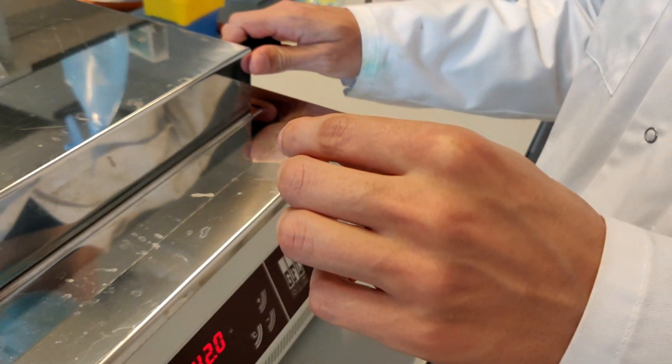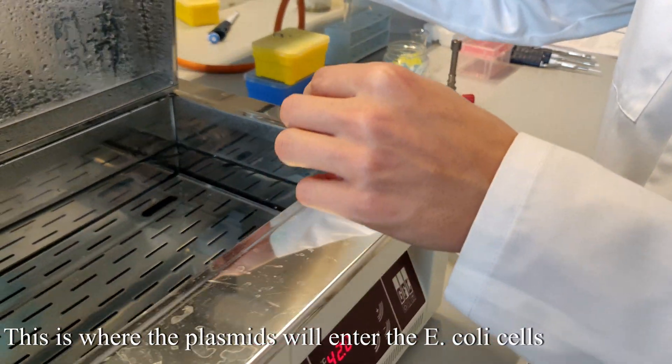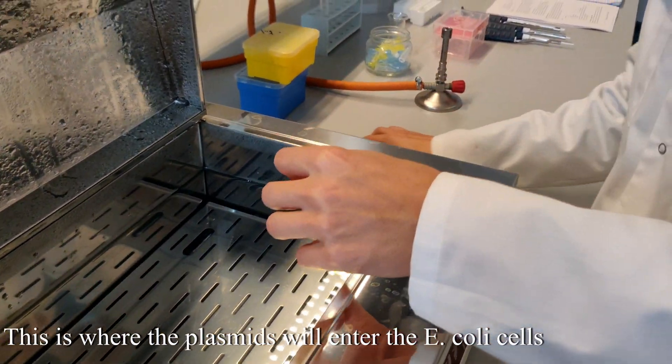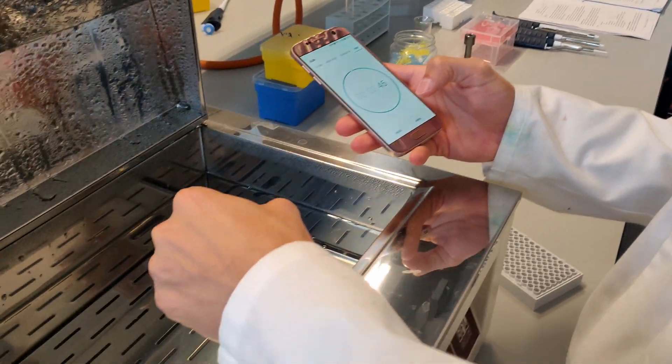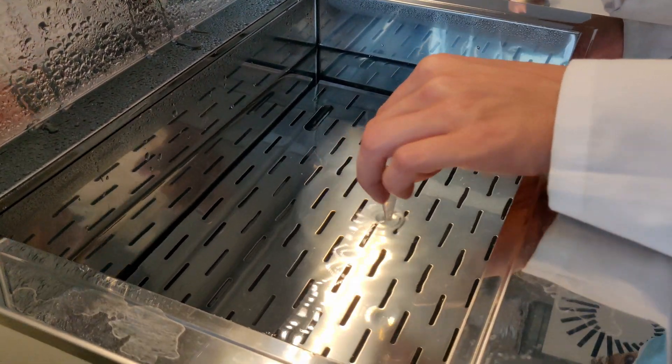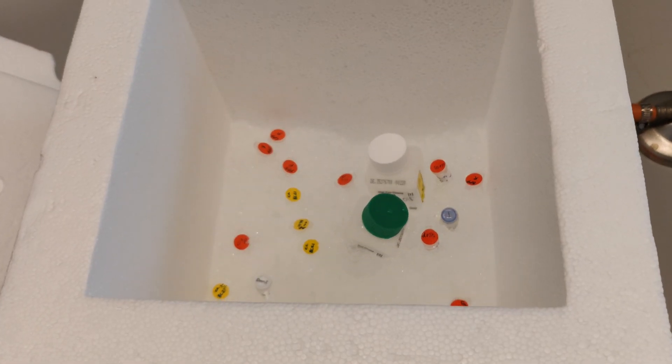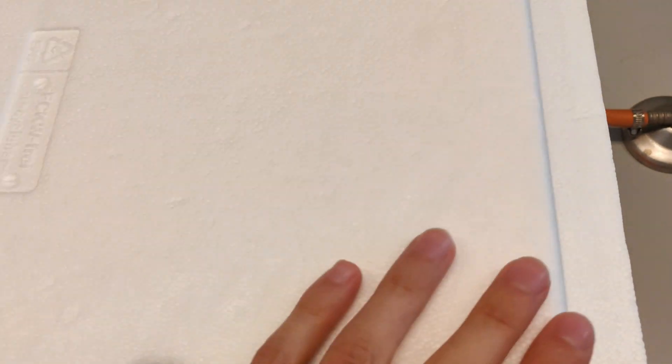Perform a heat shock by quickly transferring the competent cells to a 42 degrees water bath and holding there for 45 seconds. Quickly return the cells to ice and incubate for 2 minutes.